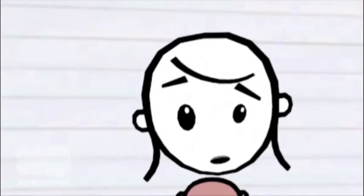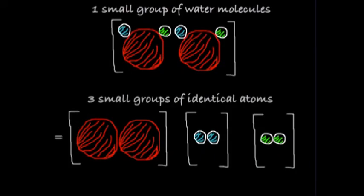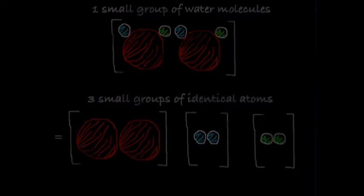Let's go over it again just to be sure. So, we have a small group of water molecules. There are three atoms per molecule and we can break the small group of water molecules into three small groups of identical atoms.